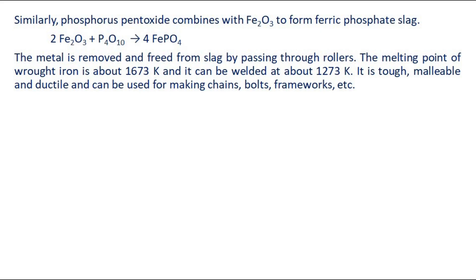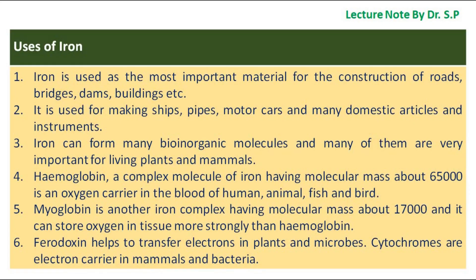The melting point of wrought iron is about 1673 K and it can be welded at about 1273 Kelvin. It is tough, malleable, and ductile and can be used for making chains, bolts, frameworks etc. Uses of Iron: Iron is used as the most important material for the construction of roads, bridges, dams, buildings etc.